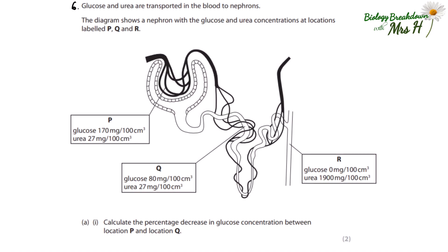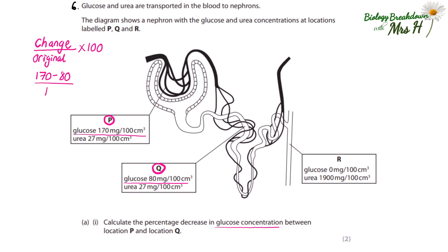Number six: glucose and urea are transported in the blood to nephrons. Calculate the percentage decrease in glucose concentration between location P and location Q. To calculate a percentage decrease, you put the change divided by the original times 100. That is 170 minus 80 at Q, divided by 170 at P, times 100, giving 52.94%. The number of significant figures has not been specified, so there is a range of correct answers: 52.94%, 53%, or 52.9%.